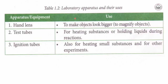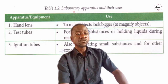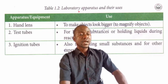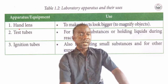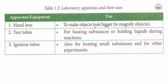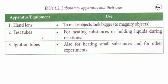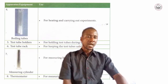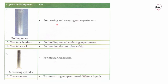Here is a table of laboratory apparatus and their uses. First, the hand lens — used to magnify objects or make objects look bigger. Second, test tubes — used for heating substances or holding liquids during reactions. Similarly, ignition tubes are for heating small substances. Third, boiling tubes — used for heating and carrying out experiments.